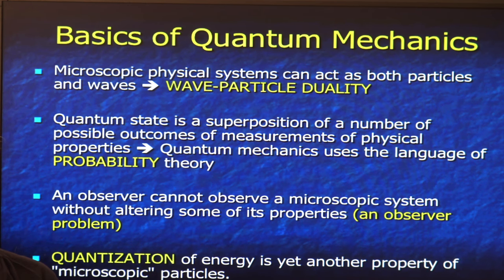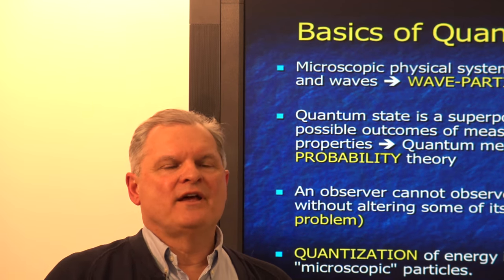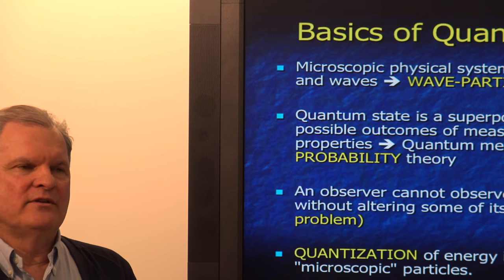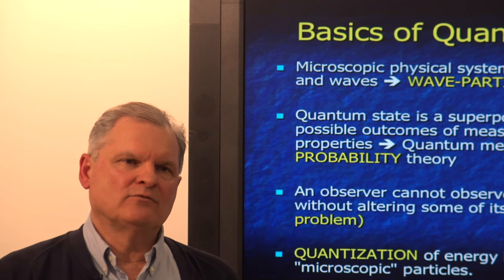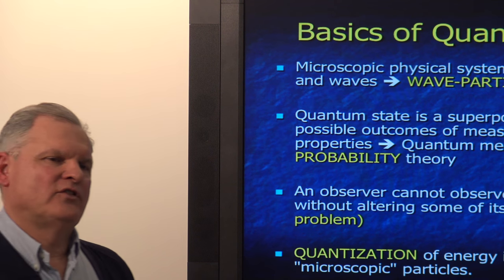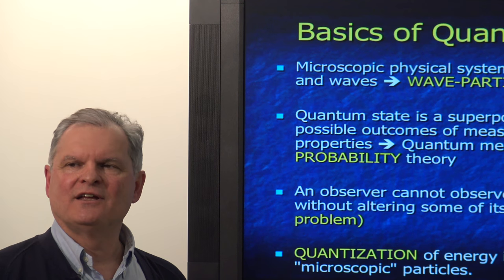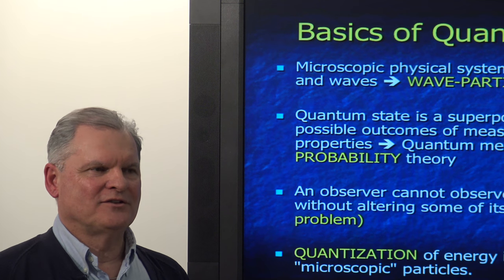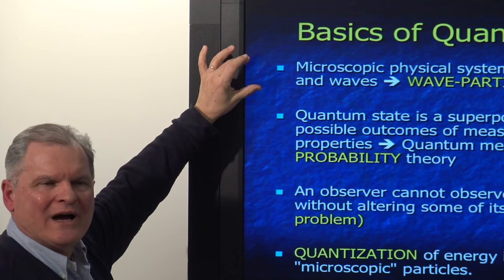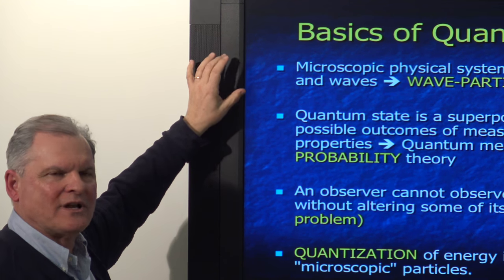Conversely, waves such as light behave like particles: if you hit a stationary electron with a photon, it will be scattered as if it collided with a massive particle. Photons or electromagnetic waves also have momentum. In classical physics, momentum is mass times velocity — yet light, which has no mass, has momentum. How? Quantum mechanics explains it. So wave-particle duality is the first distinction compared to classical physics.